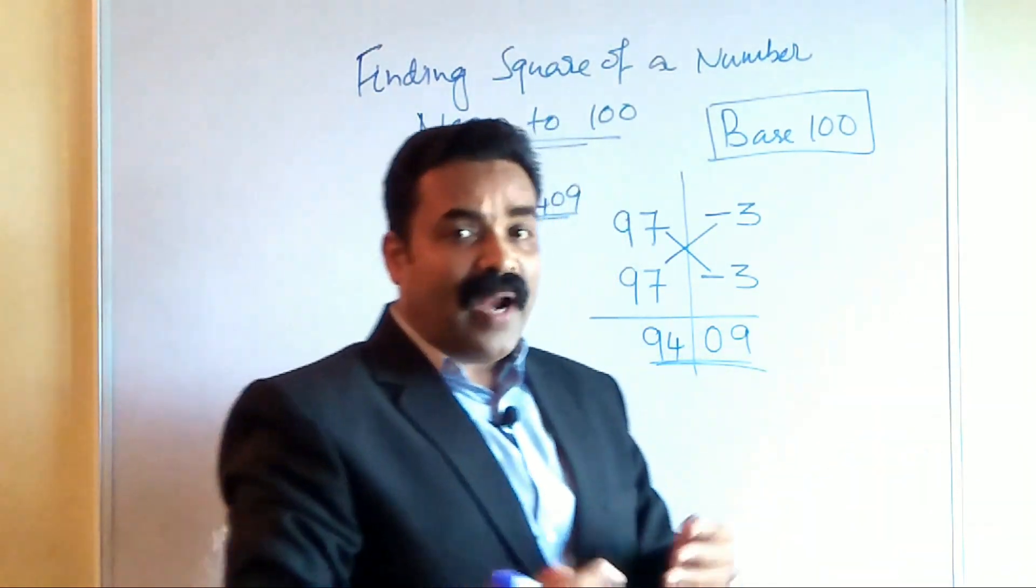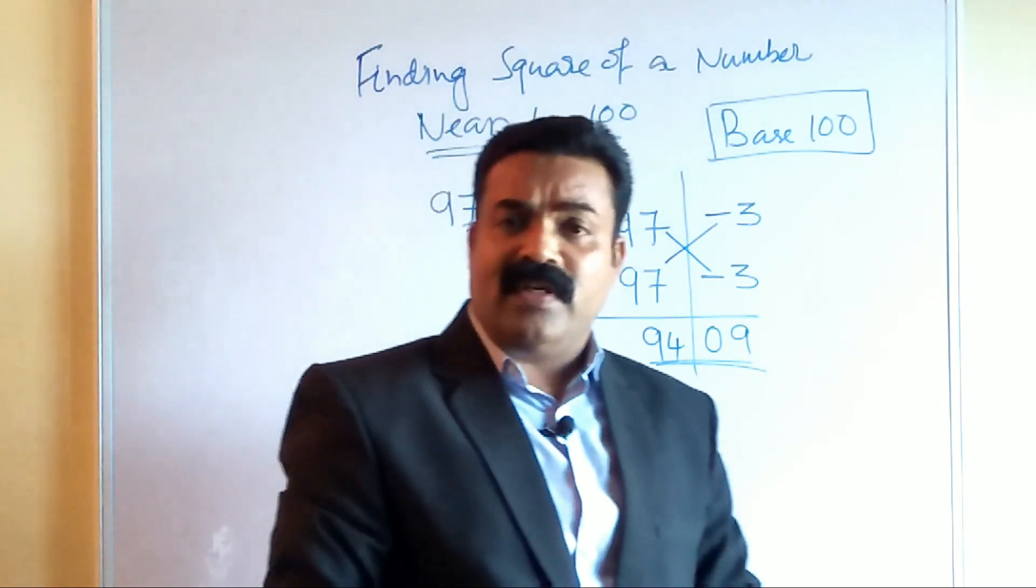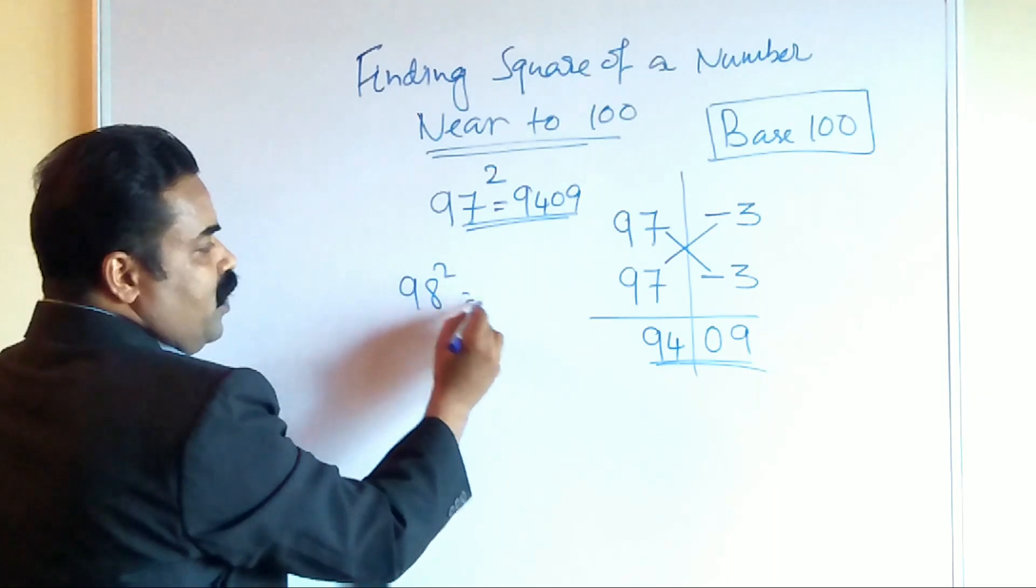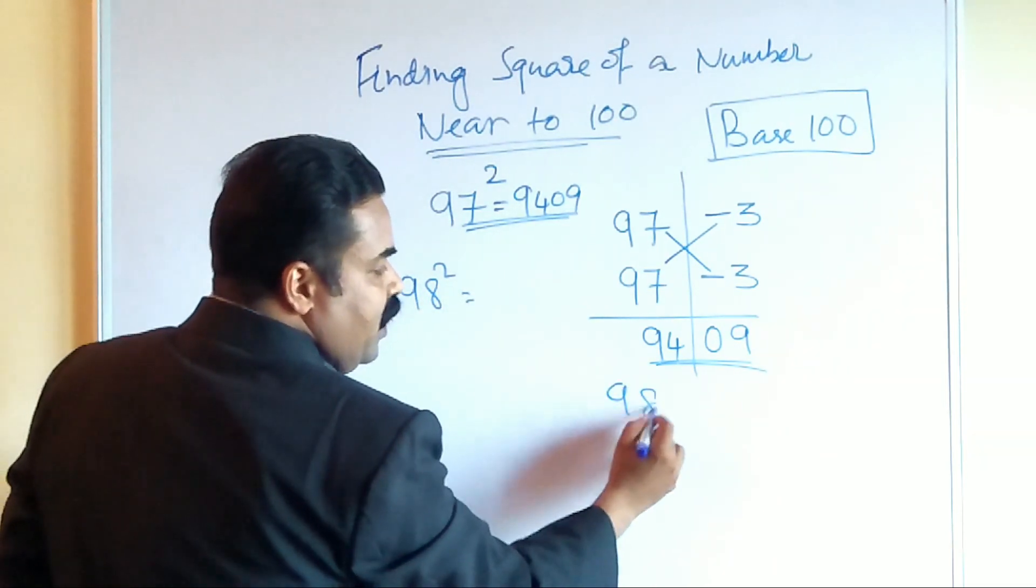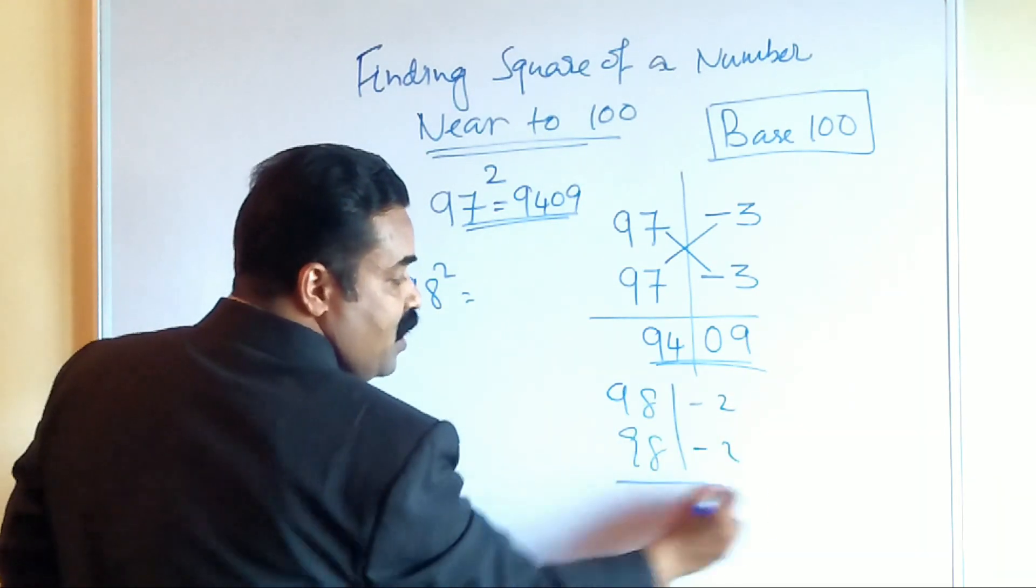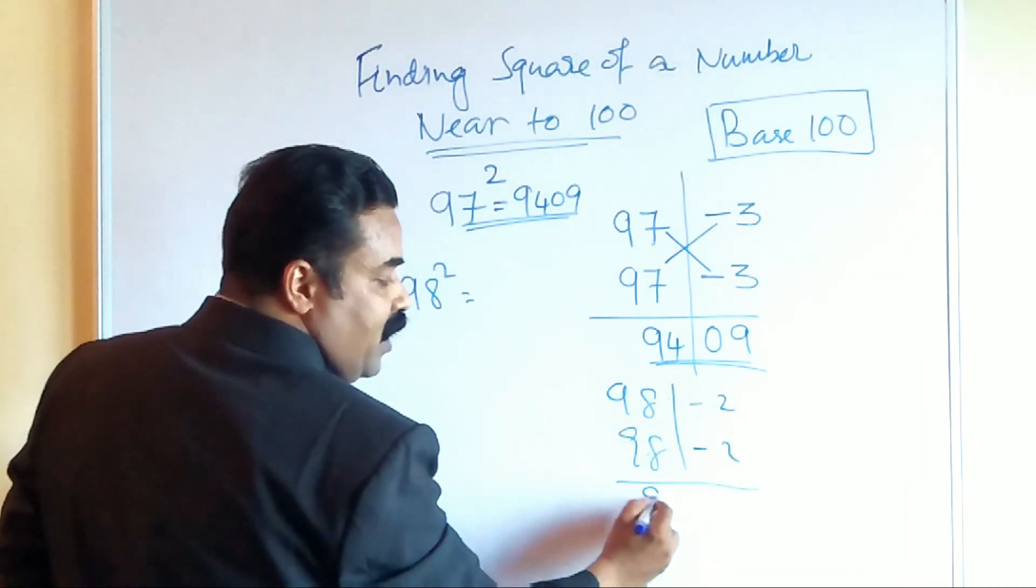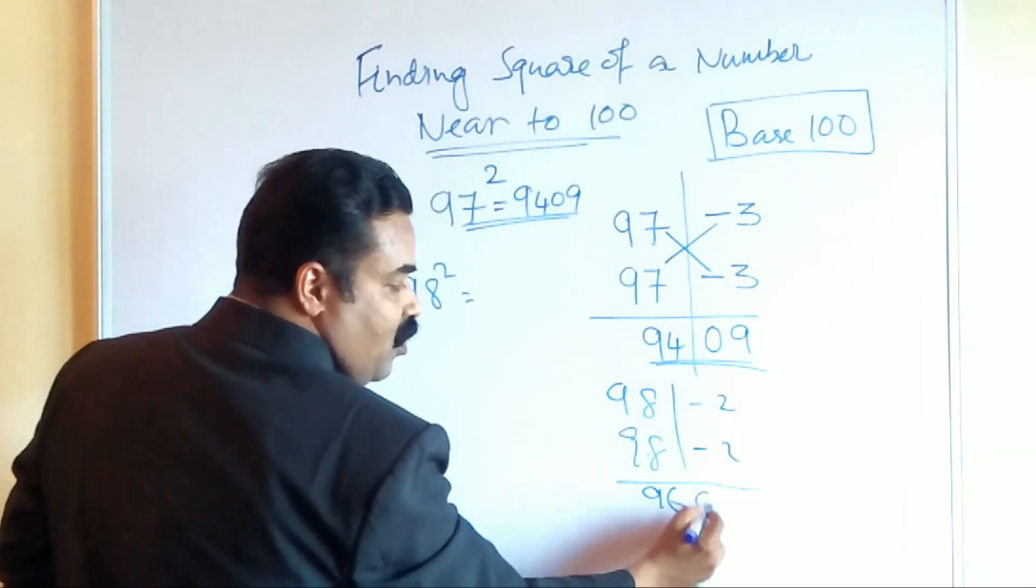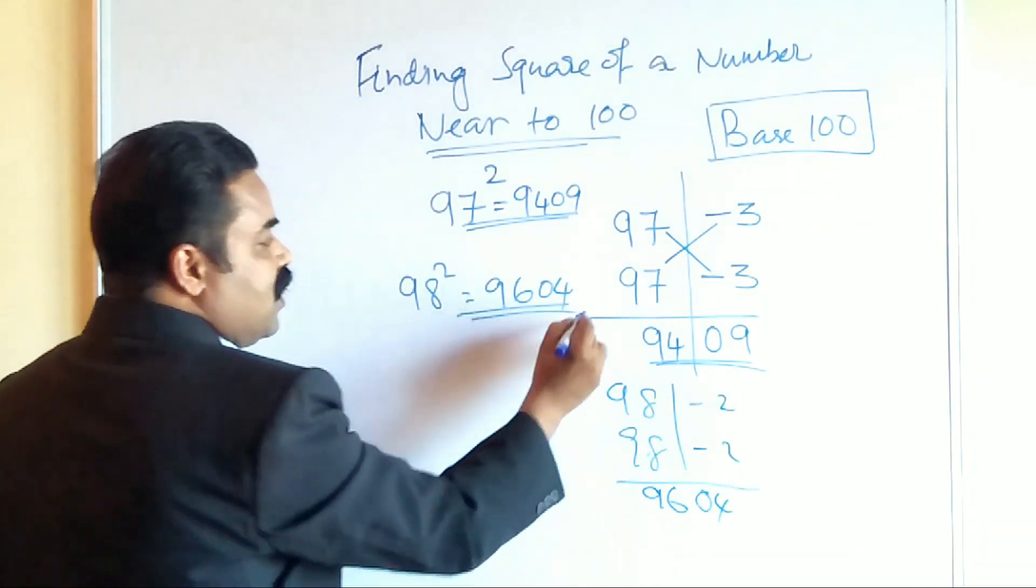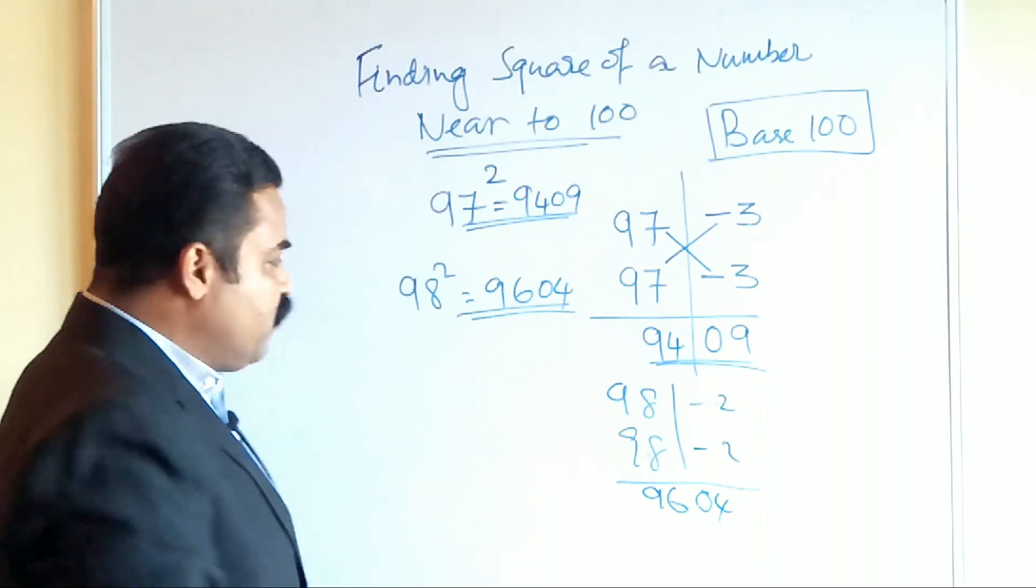Let us see you want to find out 98 square. So we know 98 square means what? 98 times 98. I can put minus 2 here, I can put minus 2 here, and 98 minus 2 is 96. 2 times 2 is 04, so I can write it as 9604. This is the answer of 98 square.